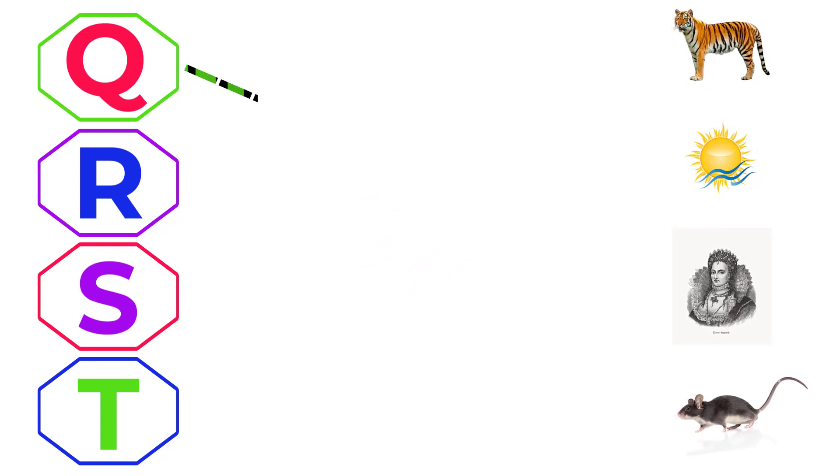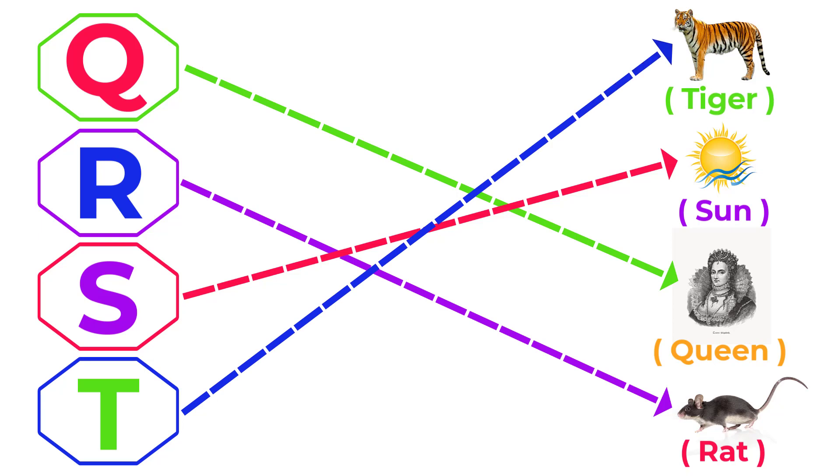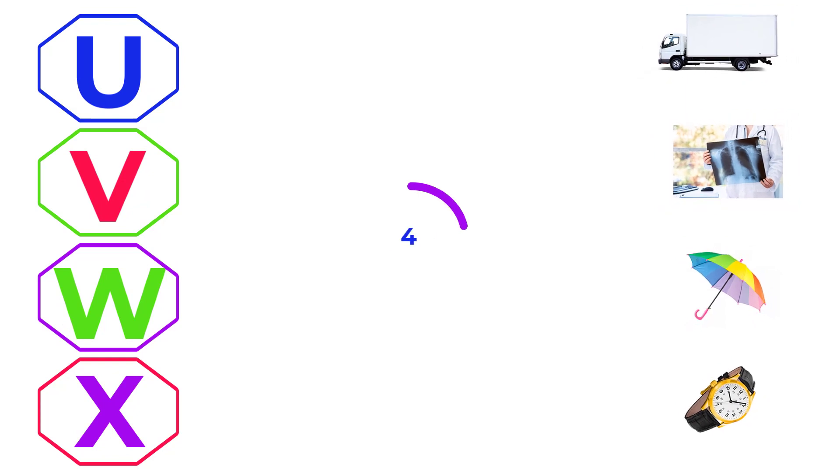Q for Queen, R for Red, S for Sun, T for Tiger.